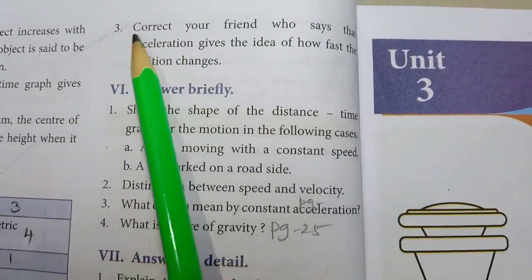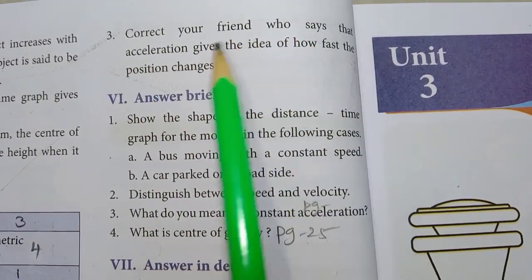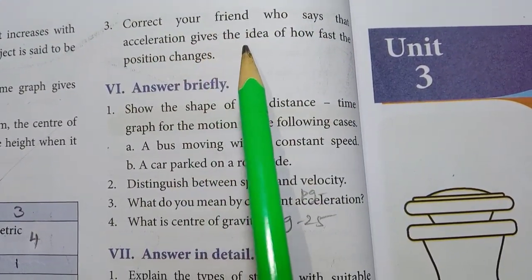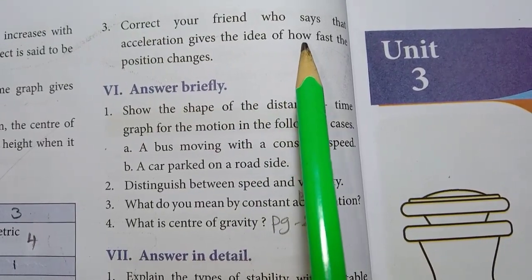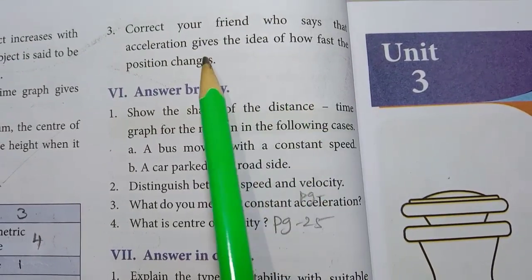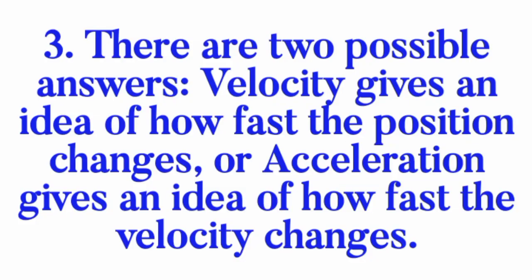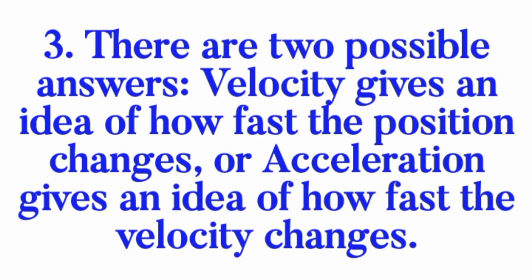3rd one — correct your friend who says that acceleration gives the idea of how fast the position changes. Answer: there are 2 possible answers — velocity gives an idea of how fast the position changes, or acceleration gives an idea of how fast the velocity changes.